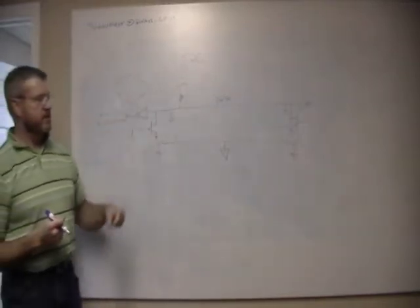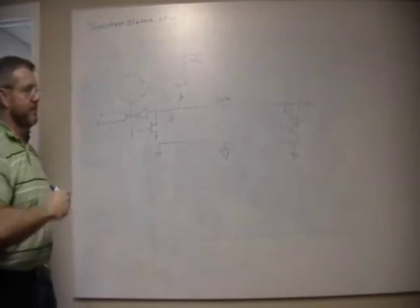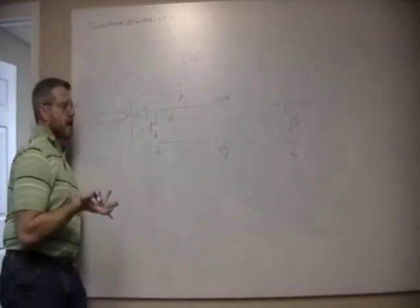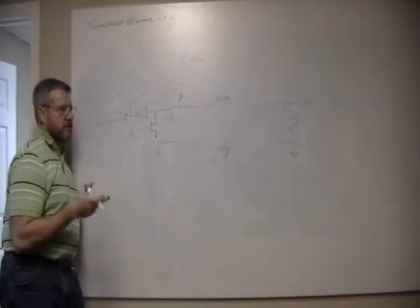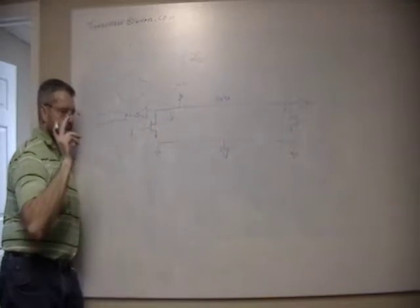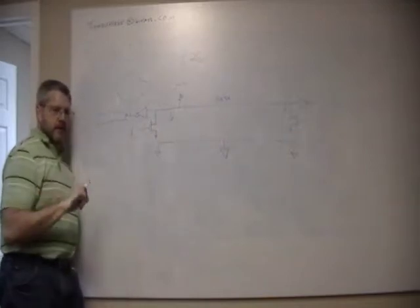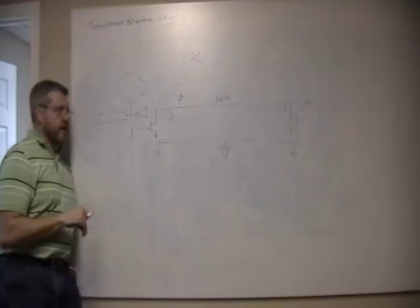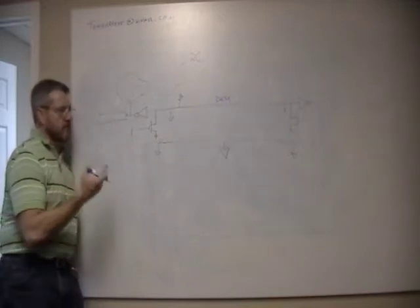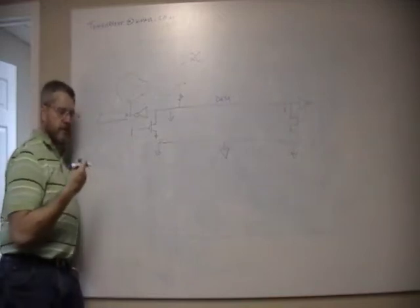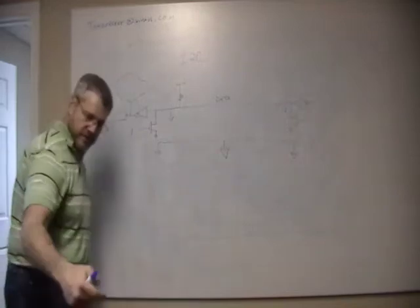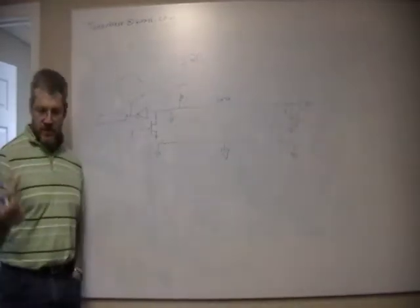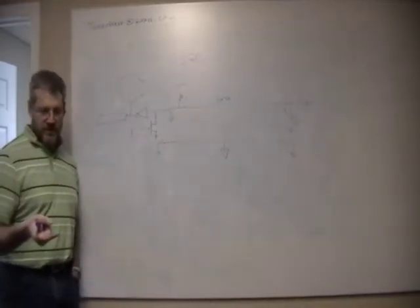You can hook many things up on I2C and daisy chain them. The way it works is devices send an address and a command, and every chip has its own address, so the right one responds.